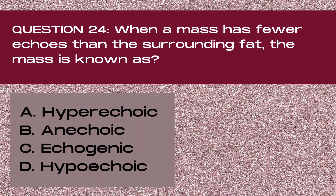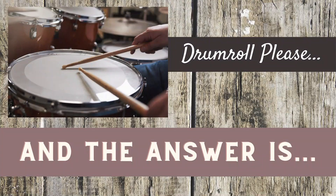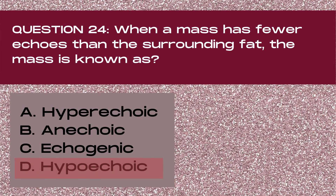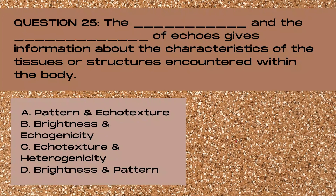Question 24. When a mass has fewer echoes than the surrounding fat, the mass is known as: A. Hypoechoic, B. Anechoic, C. Echogenic, or D. Hypoechoic. And the answer is D. Hypoechoic. Hypoechoic masses are dark gray in color, and they are weak reflectors, meaning that they have fewer echoes inside than the medium gray color of the surrounding fat.